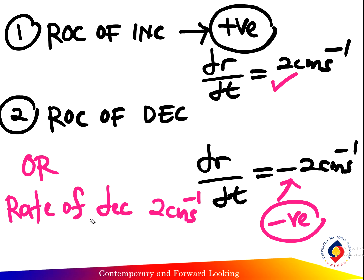If you write the answer in full as 'rate of decrease', you don't need to put the negative sign. But if you write it in short form as dr over dt, then you put the negative sign. If written in full, no negative sign is needed.